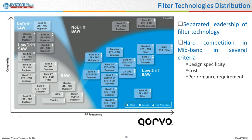The two technologies each have their own frequency domain: SAW filters for low-band applications and BAW filters for high-band. With new players coming, like Resonant, there is hard competition in the mid-band based on criteria like design, cost, and performance, where the two technologies can compete.